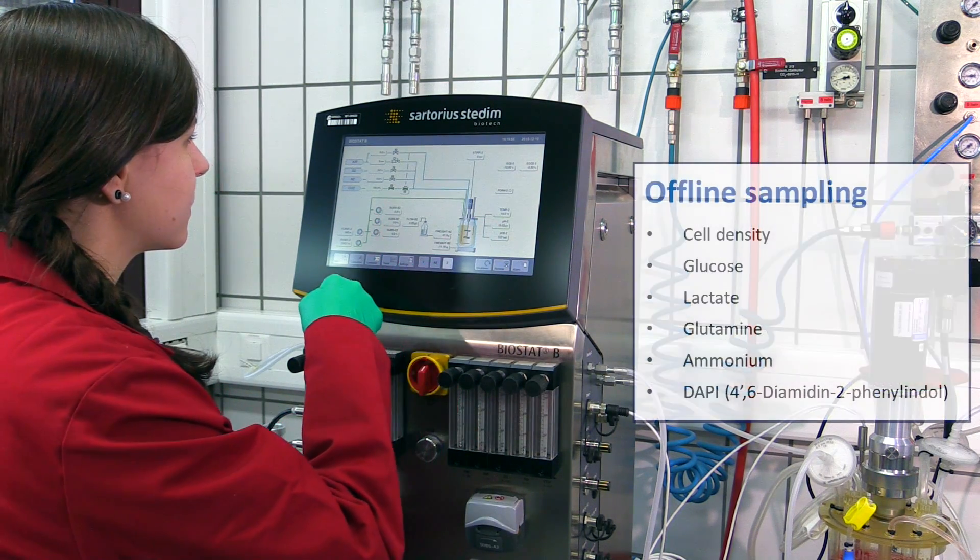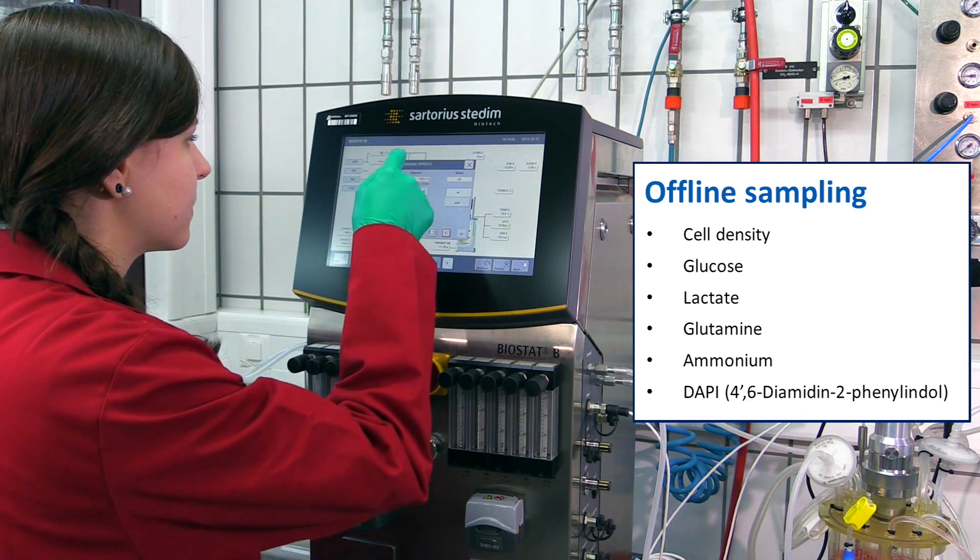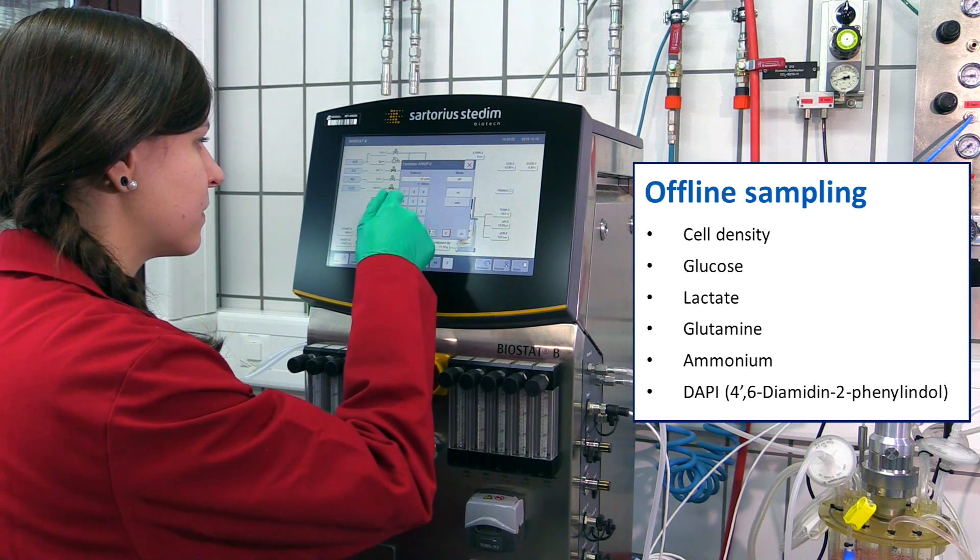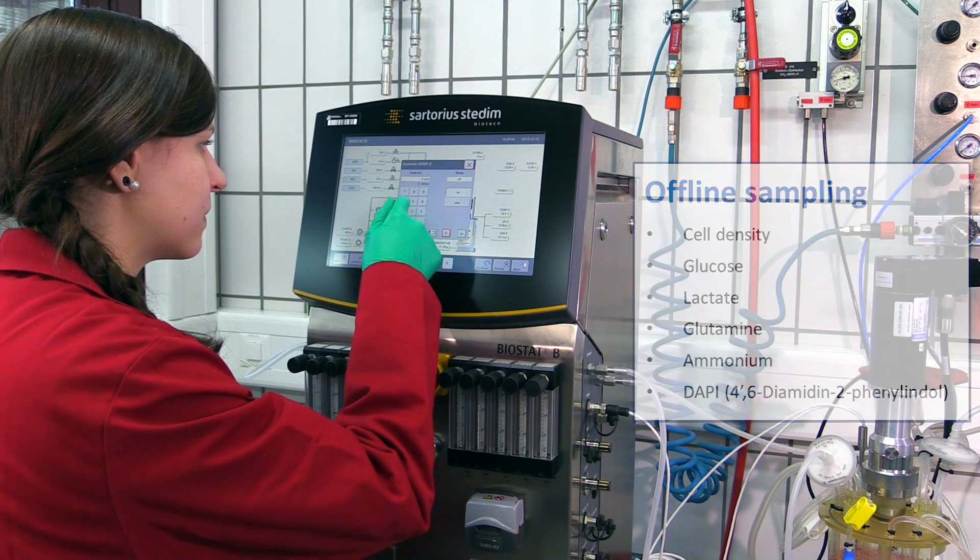It is recommended that offline samples for determination of cell density, concentration of glucose, lactate, glutamine and ammonia, as well as for DAPI staining, are taken daily.